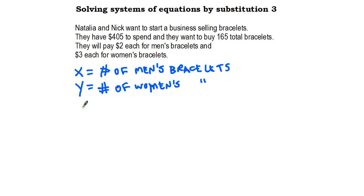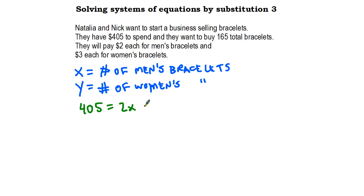Let's make an equation that relates some of these things together. We have $405 to spend. Each bracelet is $2 or $3. The number of men's bracelets is x, so the total amount spent on men's bracelets is 2 times x. The amount spent on women's bracelets is $3 times the number of women's bracelets, so that's 3 times y. These two amounts should add up to the total: 2x + 3y = 405.